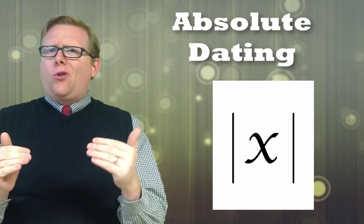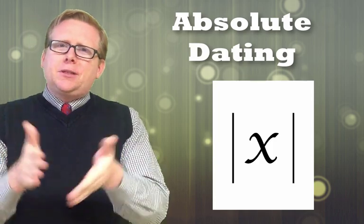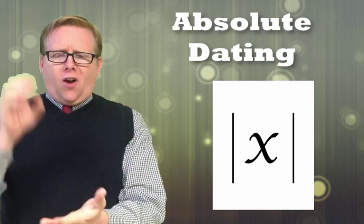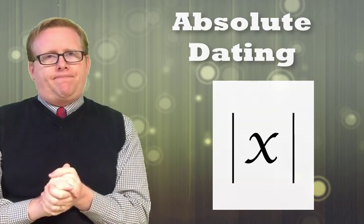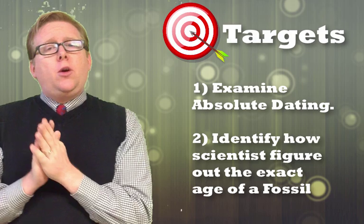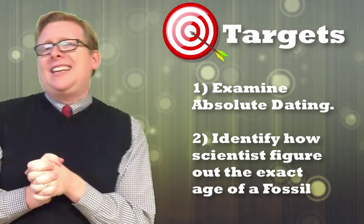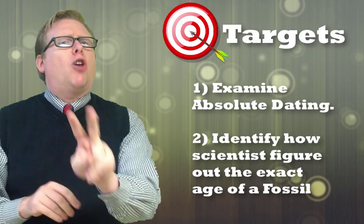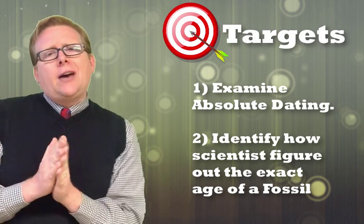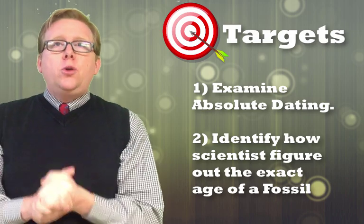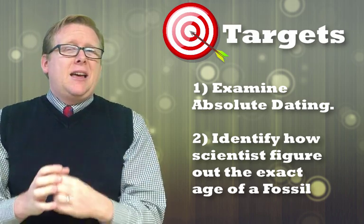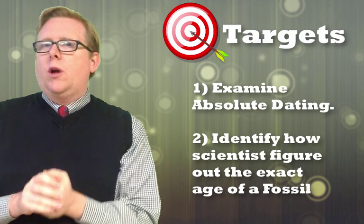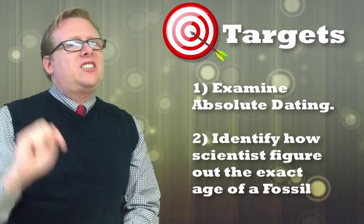In relative dating we put things in order, but that doesn't give us an exact and absolute date. Today in this video we're going to see how scientists, geologists, and paleontologists are actually able to get an absolute date for rock layers. We're going to examine something called absolute dating — sometimes called radiometric dating — and see how they use it to figure out exactly the age of a fossil or a rock.